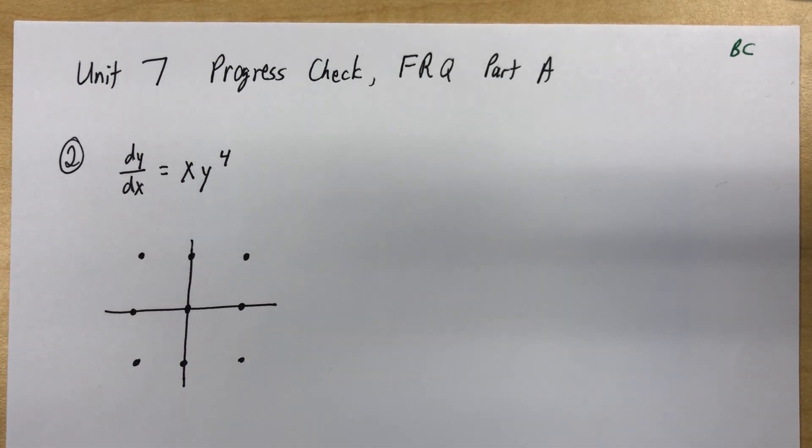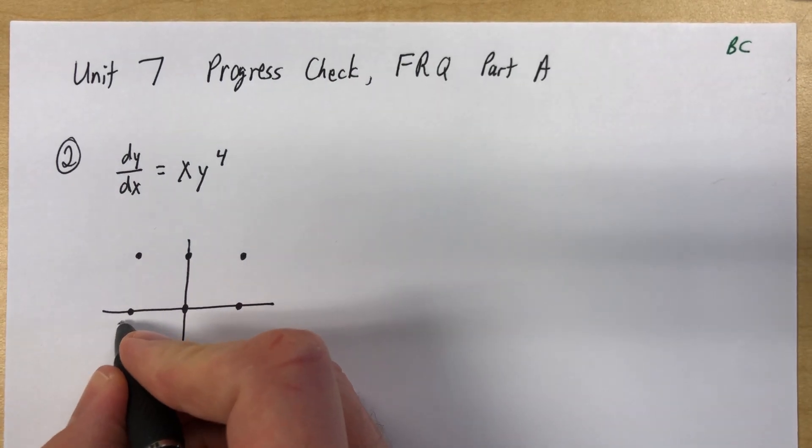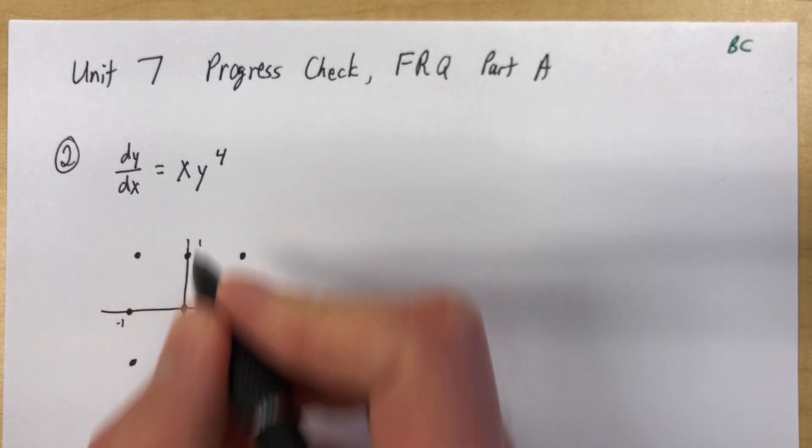They give us this differential equation and tell us to sketch a slope field for the 9 points that are indicated. And we are going out to negative 1, positive 1, positive 1, negative 1.